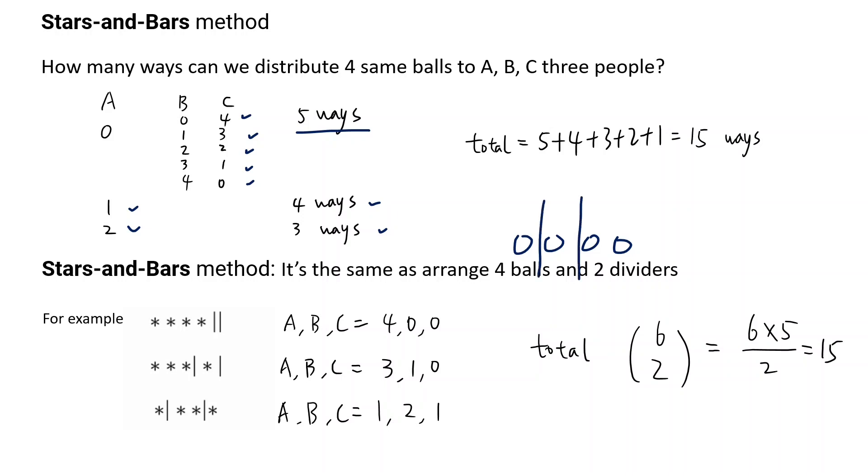It's like adding two dividers. For example, in this case, there are four stars and two dividers. This means A got four, B got zero, C got zero. In this case, it's three, one, zero. And in this case, it's one, two, one.